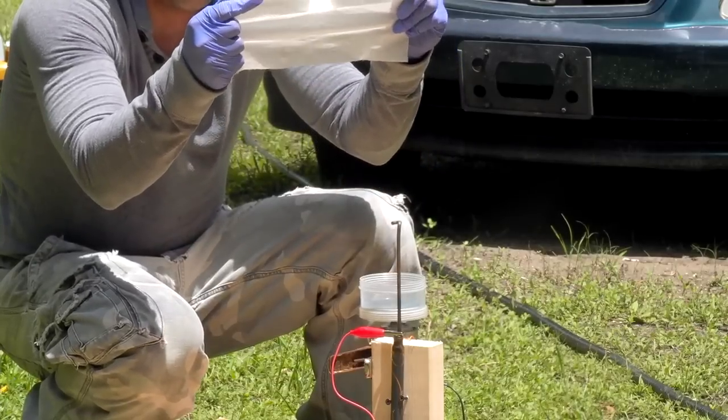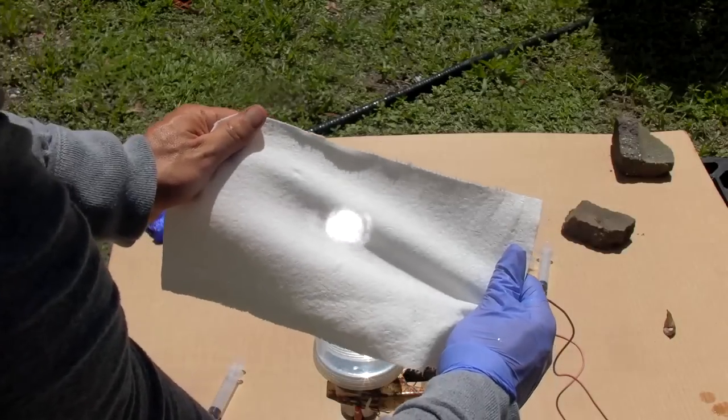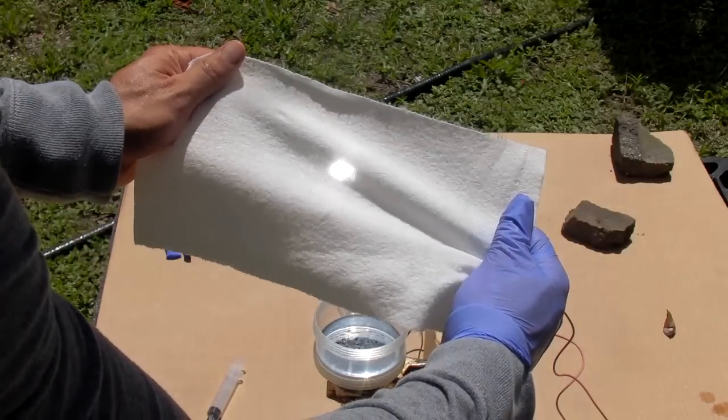Slowing the motor down shallows the parabola creating a longer focal length and enlarging the image of the sun on our cloth.